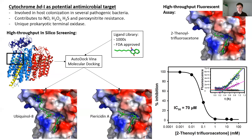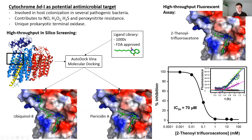Here are the results for it. You can see it generates an IC50 of around 70 micromolar for TTFA, showing this is quite a weak inhibitor, and this was already reported for TTFA. This assay should be able to be used for inhibitors designed for other binding sites, as the problem with the quinol binding site is that some of the inhibitors are likely to also bind to the mitochondrial electron transport chain. Thank you.